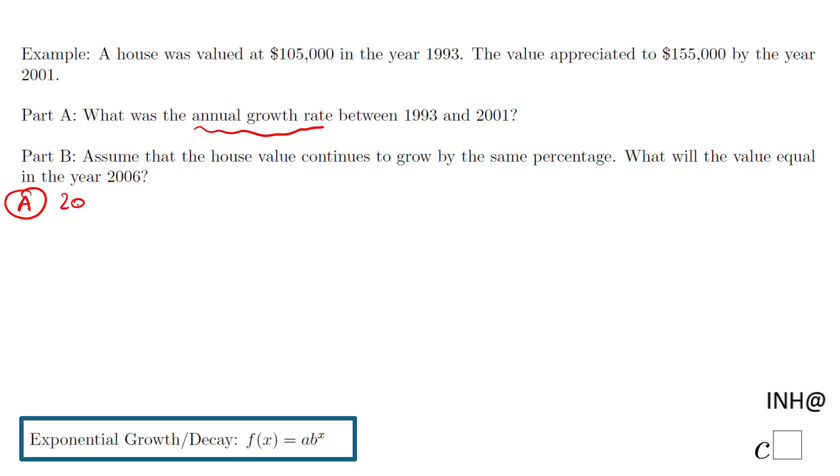First, we need to find how many years are between 2001 and 1993. Simply subtract them—that's 8 years. Now, this is the exponential growth formula. Since the value goes up, this is exponential growth, and I expect a positive rate.